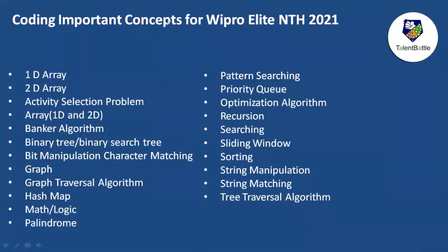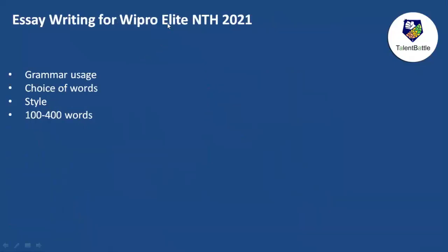The coding section assesses your programming ability. An editor is provided to compile and run test cases. Knowledge of programming algorithms, data structures, recursion, dynamic memory allocation, and modular programming will be tested. Language options are C, C++, Java, and Python. There are two coding questions in 60 minutes. Key topics to practice will be shared on screen and in an upcoming YouTube video on previous year Wipro coding questions.